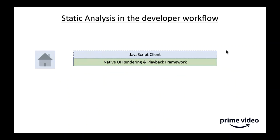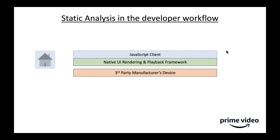We started with our mission-critical code. The native UI rendering and playback framework requires third-party assistance to get onto devices. We have a bunch of instructions passed between the device's OS and the Prime Video client that need to be in the correct order — correctly sequenced — and they can be long-running, making them really hard to test. So we decided this was a perfect use case for static analysis.